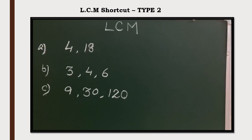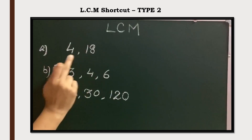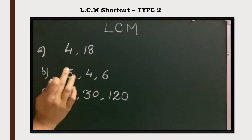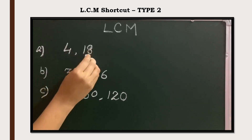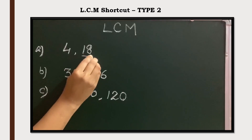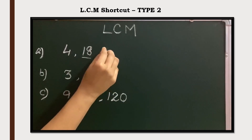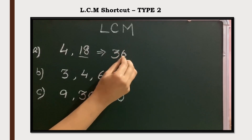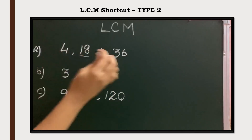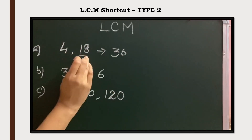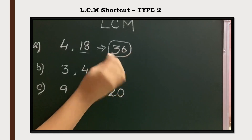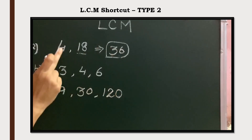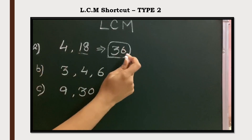Now Type 2: here the numbers are not multiples. For 4 and 18, they are not multiples of each other, but they have a common factor of 2. In this case, to find the LCM, take the bigger number and find its multiples. 18 times 2 is 36, and 36 is a multiple of 4. So the LCM of 4 and 18 is 36. Take the bigger number's multiples and check whether that multiple is also a multiple of the other number — that is the LCM.